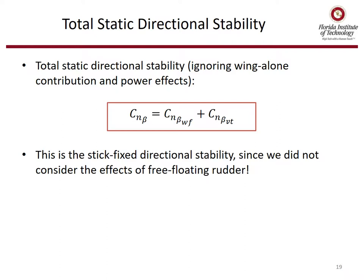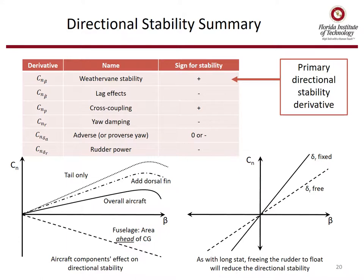The sidewash factor is difficult to estimate — data is usually obtained from wind tunnel tests. Contribution from the wing to the sidewash factor is due to asymmetric flow, structure, and yawing motion, more pronounced for low aspect ratio wings. Typically C_n beta of the vertical tail is a positive number. The total static directional stability, ignoring wing-alone contribution and power effects, is C_n beta equals C_n beta of the wing-fuselage plus C_n beta of the vertical tail. This is the stick-fixed directional stability since we did not consider effects of a free-floating rudder.